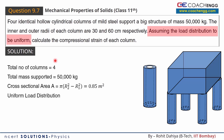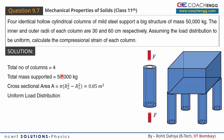Assuming the load distribution to be uniform, we take uniform load distribution across all four columns. This means the weight of 50,000 kg is equally shared by the 4 columns.